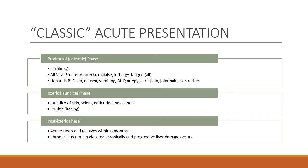The icteric phase, or the jaundice phase, we see jaundice of the skin and sclera — so icterus also can refer to the sclera — and then dark urine and pale stools. Pruritus also starts to occur during the icteric phase as there is a buildup of toxins within the body.